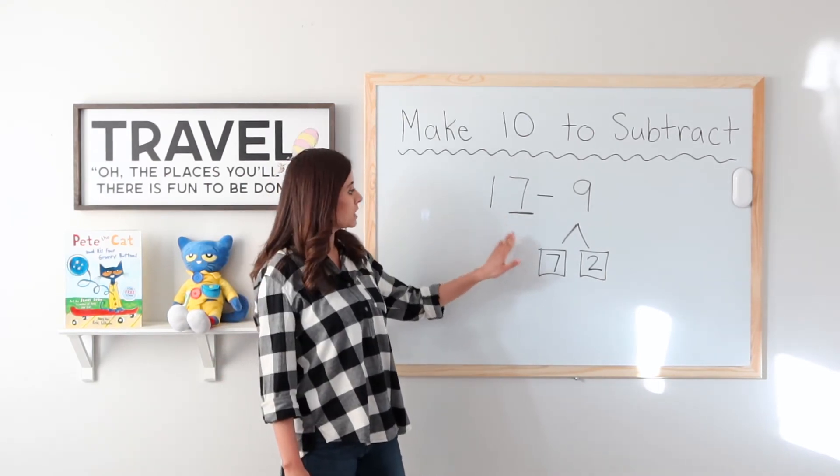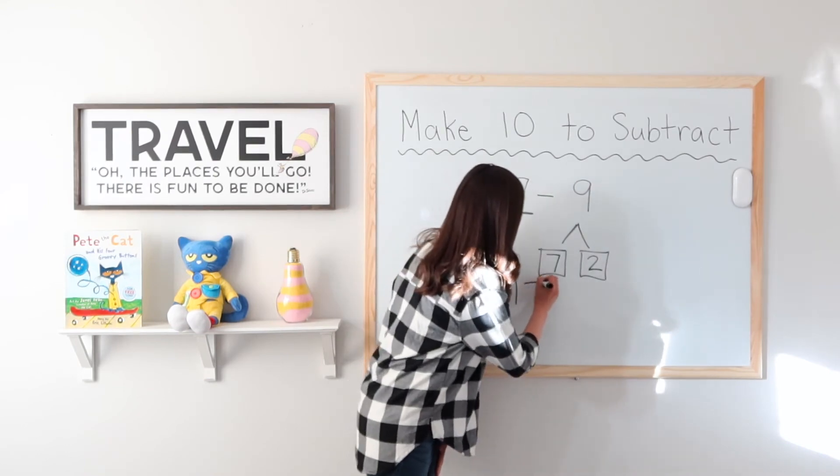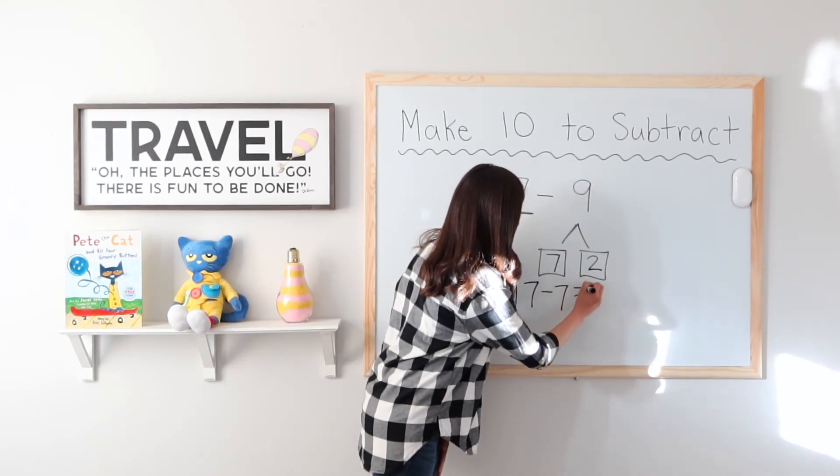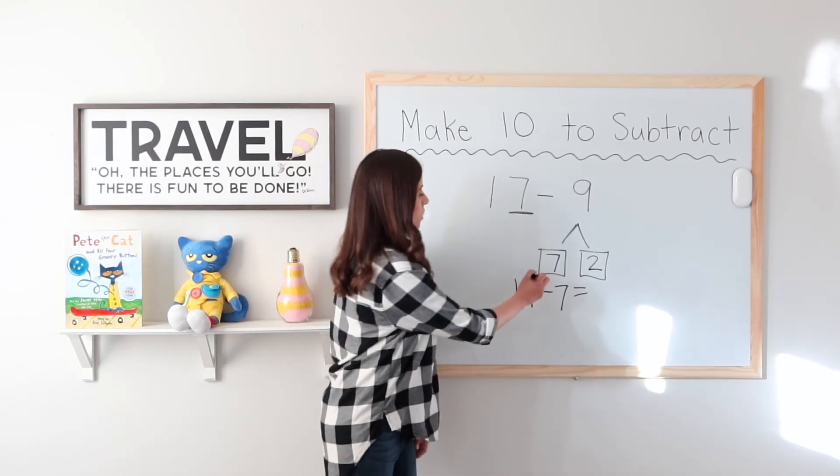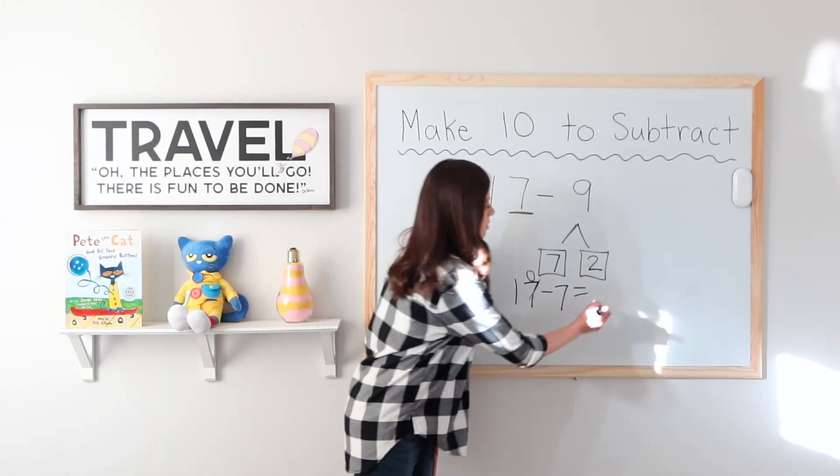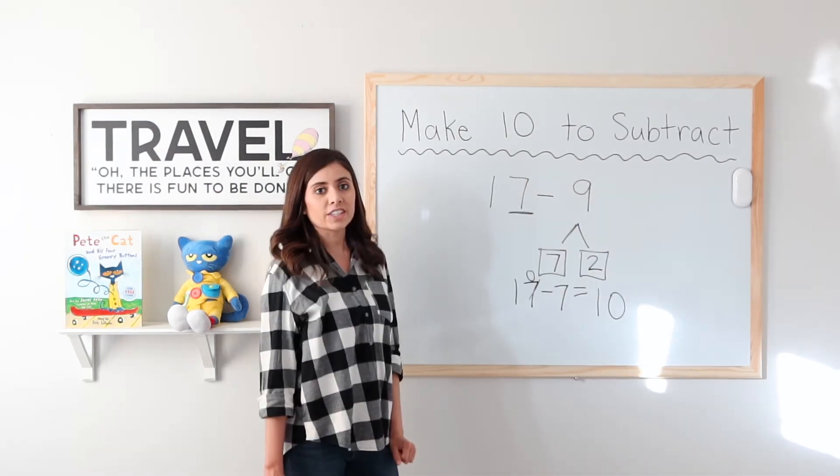Step 2. 17 minus 7. This 7 cancels this 7 out into 0. So that's 10.